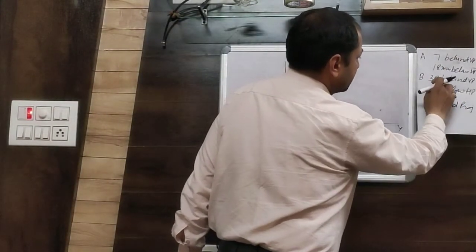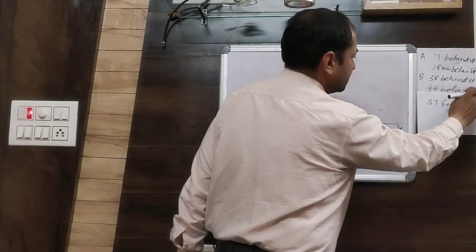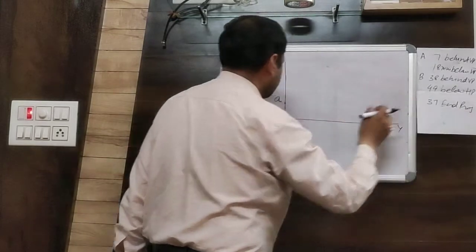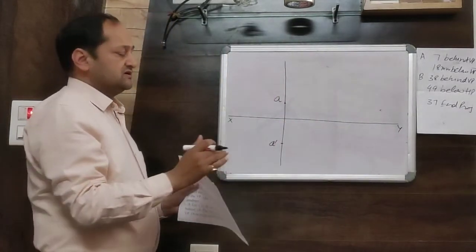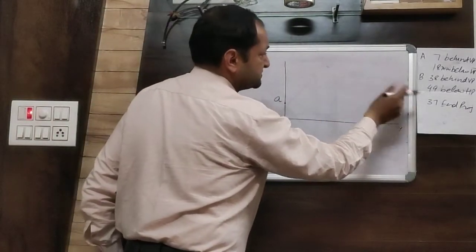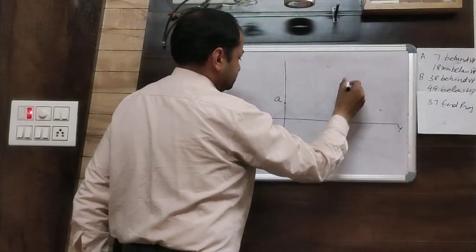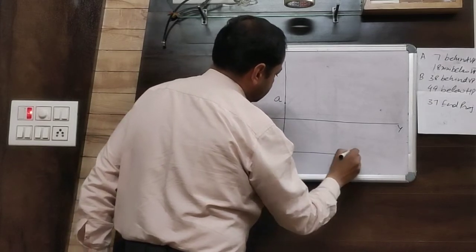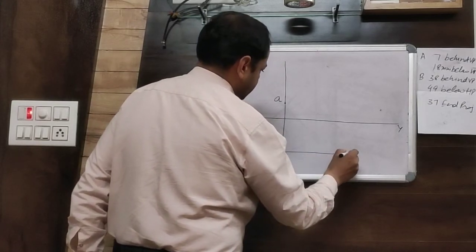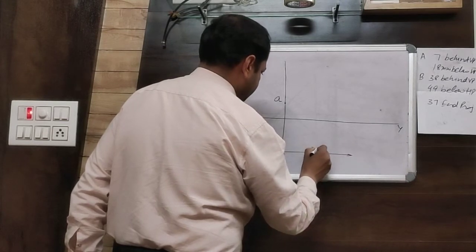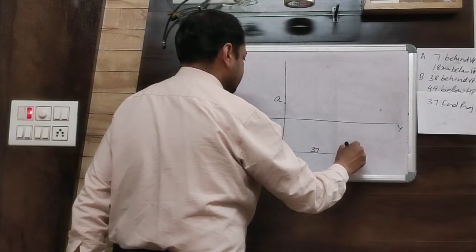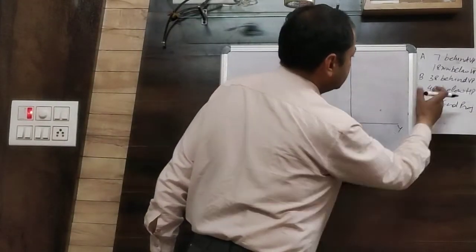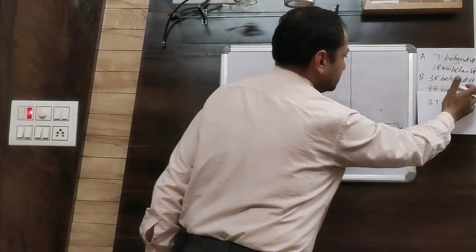Next, you are given point B — 38 mm behind VP and 49 mm below HP. End projectors represent the distance between the two ends of the line, which is given as 37 mm. So take a projector line at a distance of 37 mm, and on this projector line mark point B with its front and top views.